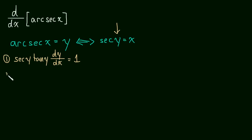And now we can solve for dy dx, and we get the derivative that we're after, dy dx is equal to 1 divided by secant y tangent y.